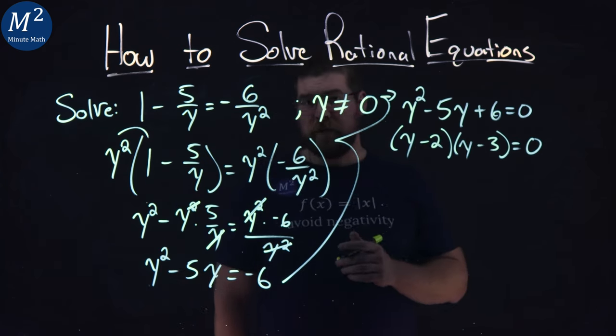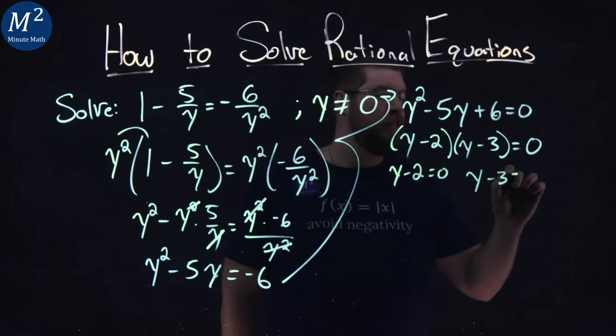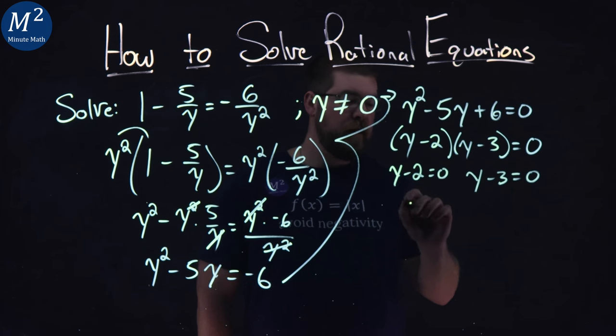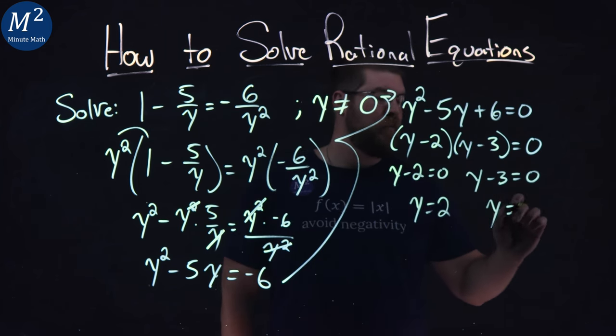From there, we solve each individually for 0, y minus 2 equals 0, and y minus 3 equals 0. Add 2 to both sides, and y equals 2, and y equals 3, and we add 3 to both sides.